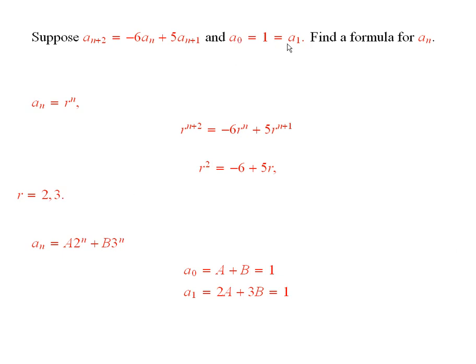That is where we use this condition. a sub 0 is equal to a plus b, because that is what you get when you plug in 0 for n. a1 is equal to a times 2 plus b times 3, and that is supposed to equal 1.